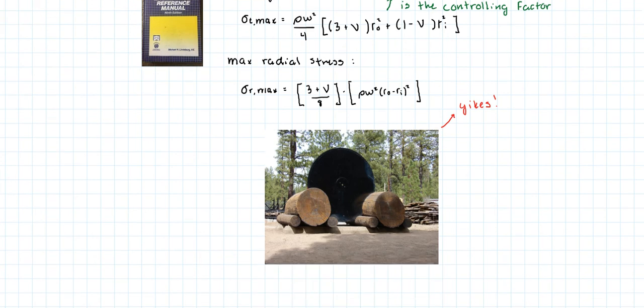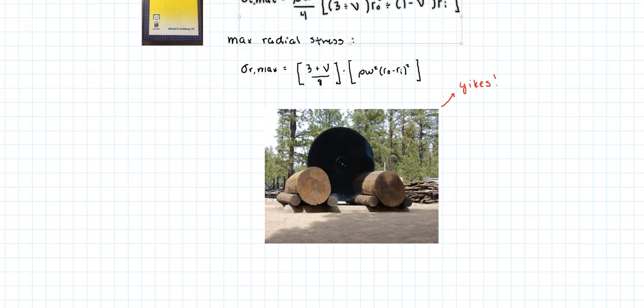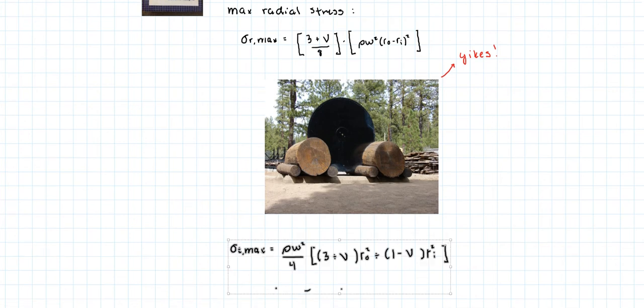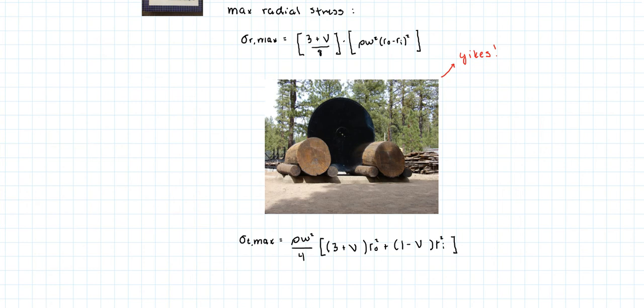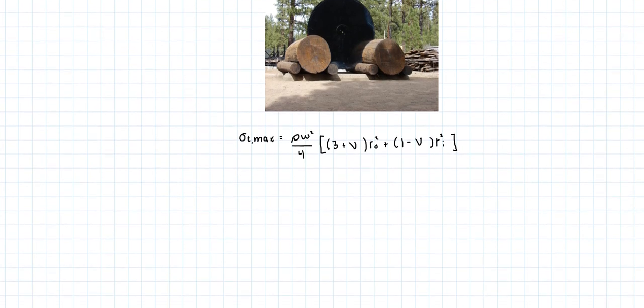Let's take this guy right here. Okay, so that is 7,850 times 100π over 3 squared divided by 4.